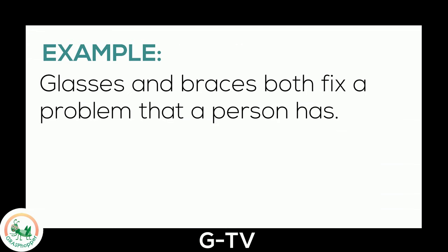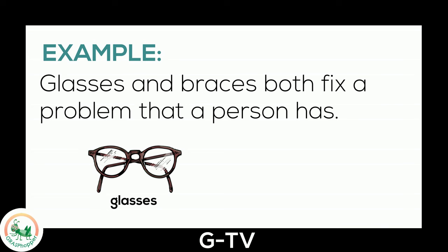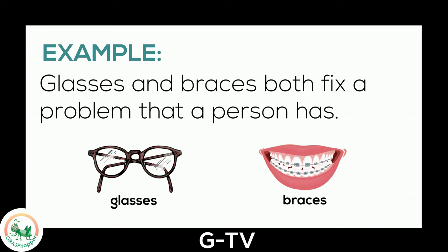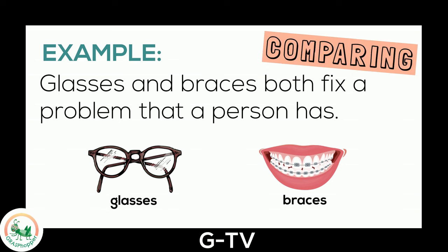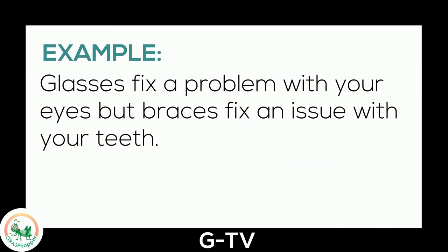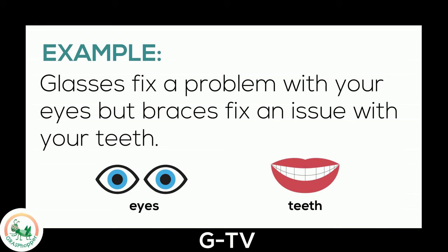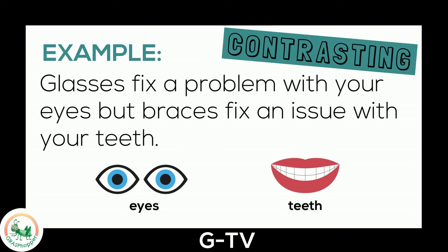Here's an example sentence: Glasses and braces both fix a problem that a person has. The author is comparing, since this sentence tells what the topics — glasses and braces — have in common. Here's another example: Glasses fix a problem with your eyes, but braces fix an issue with your teeth. The author is contrasting, since this sentence tells what is different about the topics.